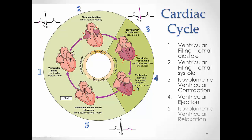Step four is ventricular ejection. The ventricles are still contracting — now even more. They continue to squeeze, and the pressure increases enough to force the semilunar valves open, because now the pressure in the ventricles is greater than in the arteries. Blood can then move out into those arteries. So this is ventricular ejection: we're ejecting blood out into the arteries during ventricular systole.